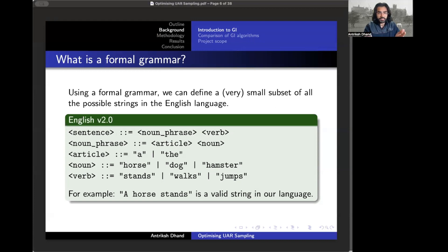So on the slide here is a really small example of a grammar. There are only 18 valid strings in this language: a horse stands, a horse walks, a dog stands, etc. All other strings are invalid, so a horse sits isn't a valid string.